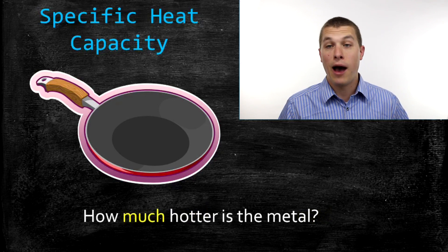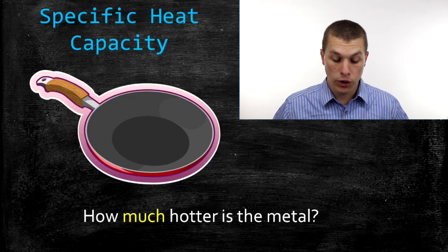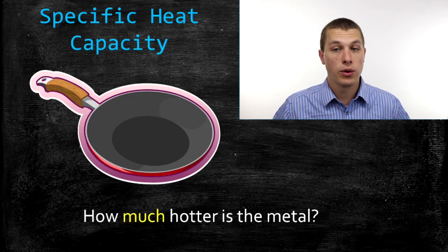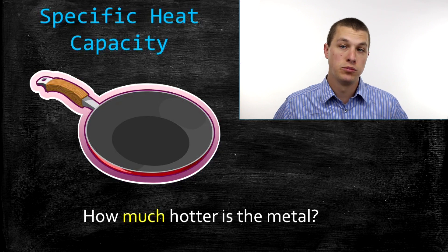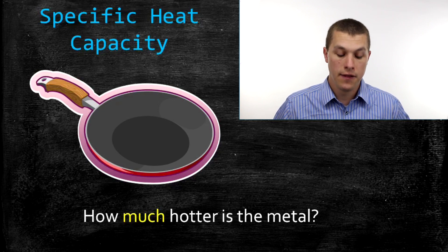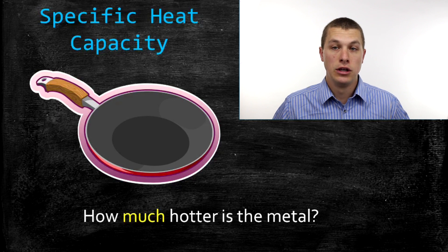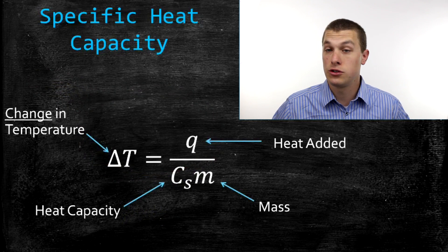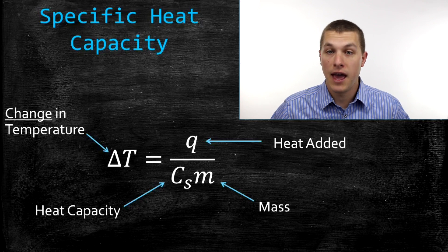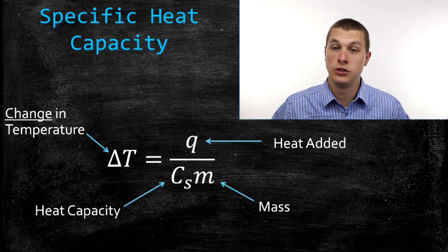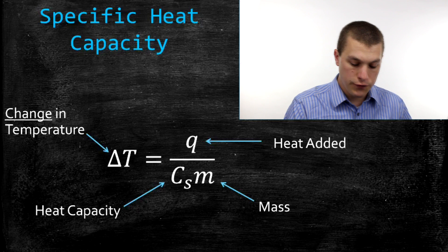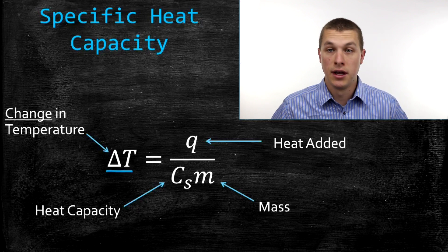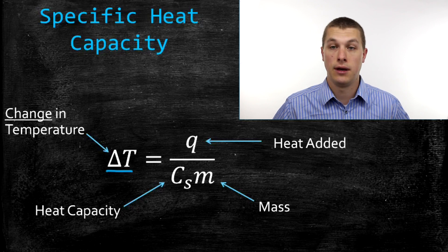Specifically, we're going to think about how much hotter things get. You might ask: how much hotter is the metal than the wood? There we're thinking about a change in temperature — how much more did the temperature of metal increase than the temperature of the wood? We can calculate that using our specific heat equation. What we're calculating is this change in temperature, and that triangle is called delta — it's a Greek letter — and whenever you see it, we're calculating something that's a change.